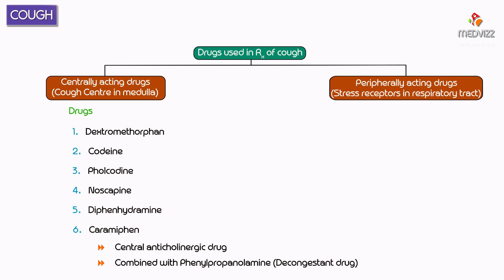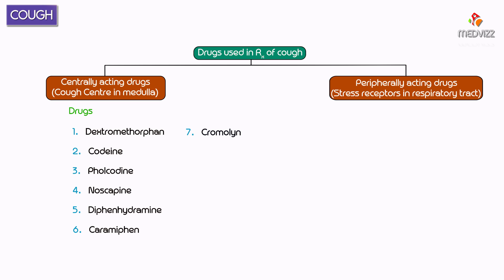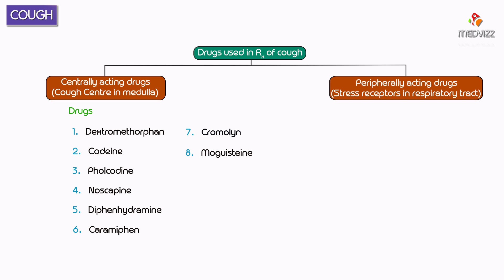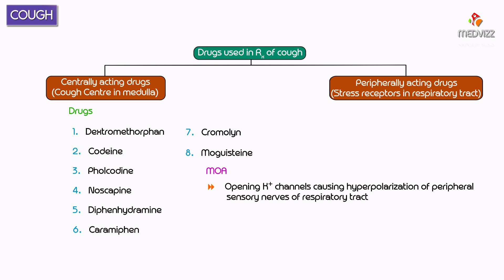Cromolin acts by depolarizing the peripheral sensory nerves in the respiratory tract and can be used in cough induced by ACE inhibitors. Another drug, mugustin, acts by opening potassium channels and causing hyperpolarization of peripheral sensory nerves of the respiratory tract. Antitussive drugs are usually combined with expectorants and mucolytics.